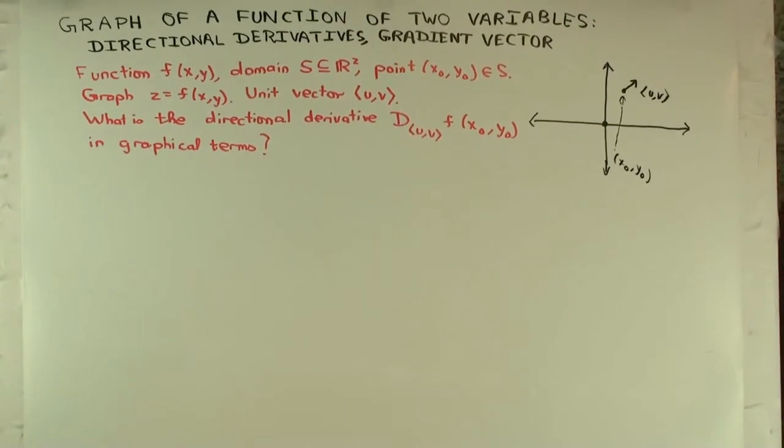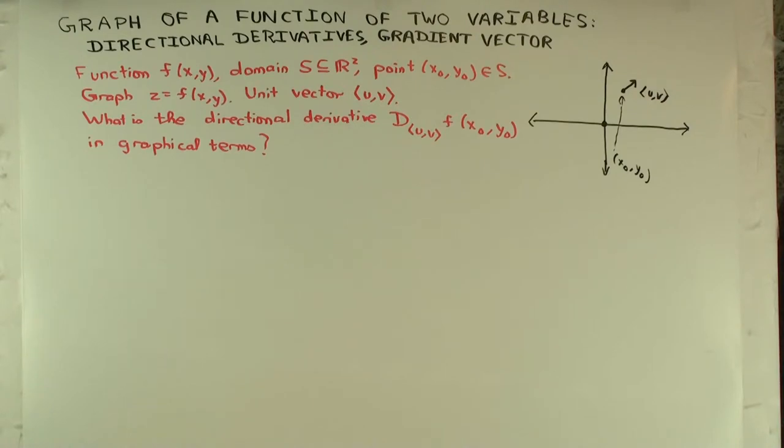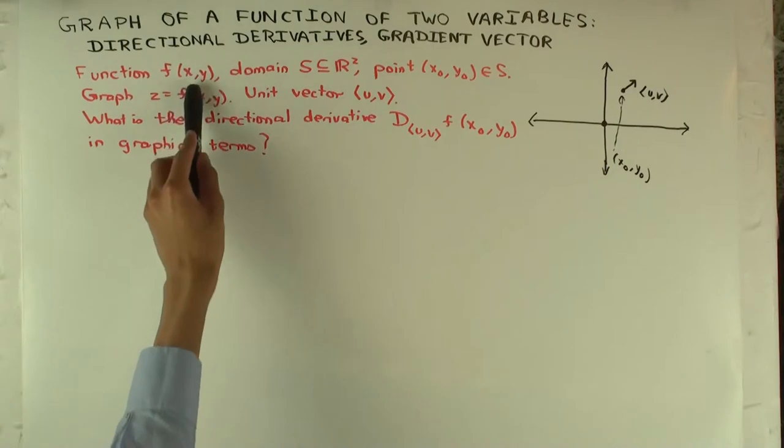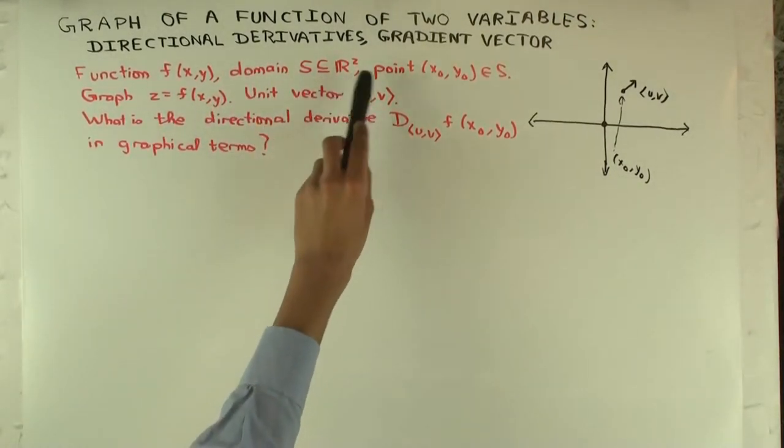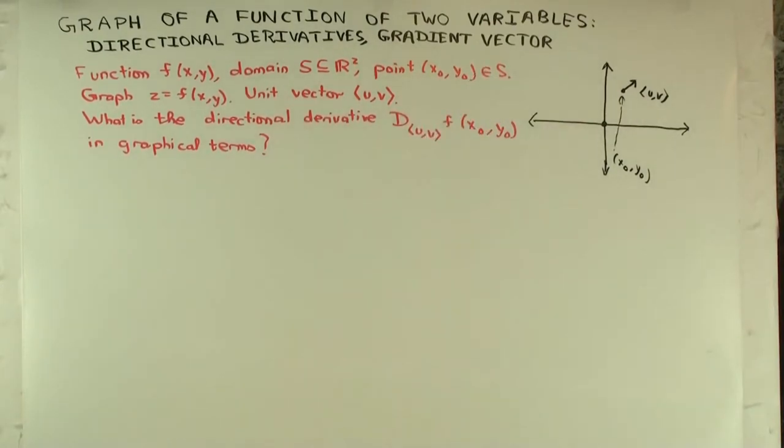So in this talk, I'm going to consider directional derivatives and the gradient vector for a function of two variables in terms of the graph. A function f of two variables, the graph is z = f(x,y), the domain is a subset of R², and there's a point (x₀, y₀) in the domain.